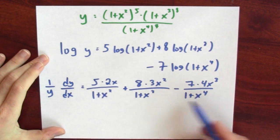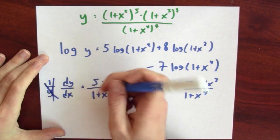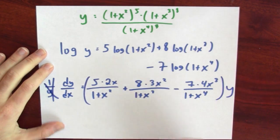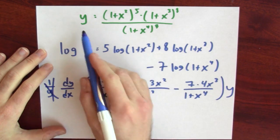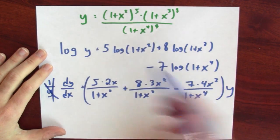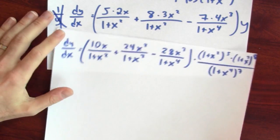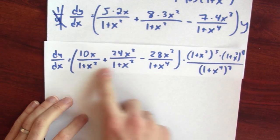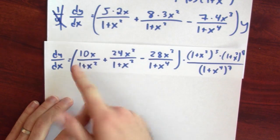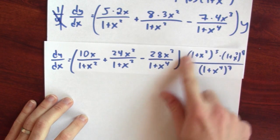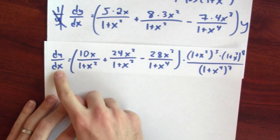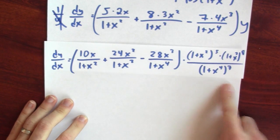We're almost there. So now, I just multiply both sides by y, and I get that the derivative is this thing we calculated times y. I can write this a little bit more nicely. 5 times 2x is 10x, 8 times 3 is 24, 7 times 4 is 28, and then I multiplied by y. So I found the derivative. Here it is.